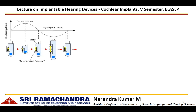The basilar membrane deflections can deflect the stereocilia of the sensory hair cells. The cochlea has two types of sensory hair cells: outer hair cells and inner hair cells. The outer hair cells are in contact with both the tectorial membrane and the basilar membrane, whereas the inner hair cell stereocilia are not in contact with the tectorial membrane — they are in contact with only the basilar membrane.